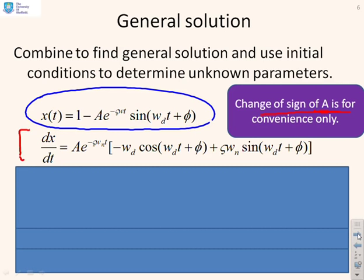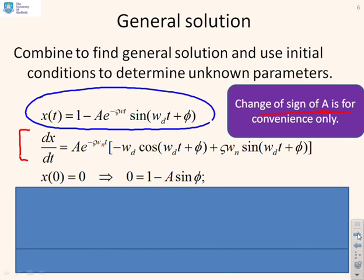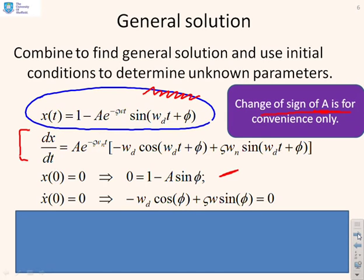The derivative has been computed because we'll need it: a·e^(−ζωnt) · [−ωd cos(ωdt + φ) + ζωn sin(ωdt + φ)]. Substituting the initial condition x(0) = 0 gives 0 = 1 − a sin(φ). Next, substituting the initial condition ẋ(0) = 0 gives: −ωd cos(φ) + ζωn sin(φ) = 0.